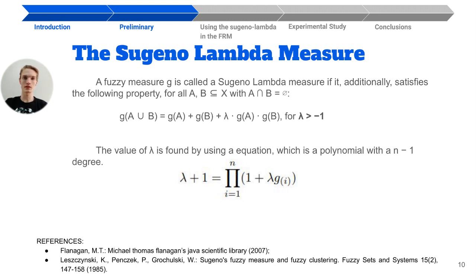As you can see in the first equation, the measure is obtained by adding two variables plus the lambda value multiplied by the same two initial numbers. And the lambda is found by solving the generated polynomial equation when making use of the second equation shown here.